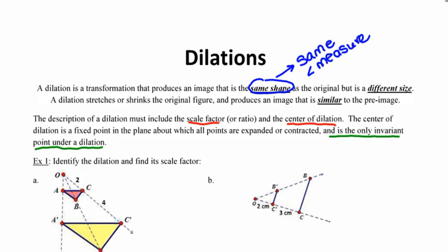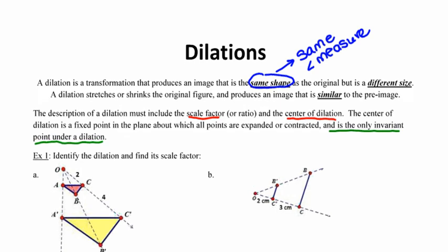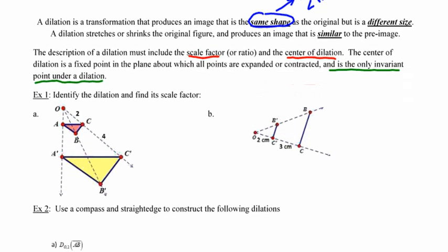In number one, part A, it says identify the dilation and find the scale factor. The first thing I'm going to ask myself is whether I'm looking at a reduction or an enlargement. The image is the big yellow triangle, and the pre-image is the small red one. I've gone from something small to something bigger, so this is going to be an enlargement.